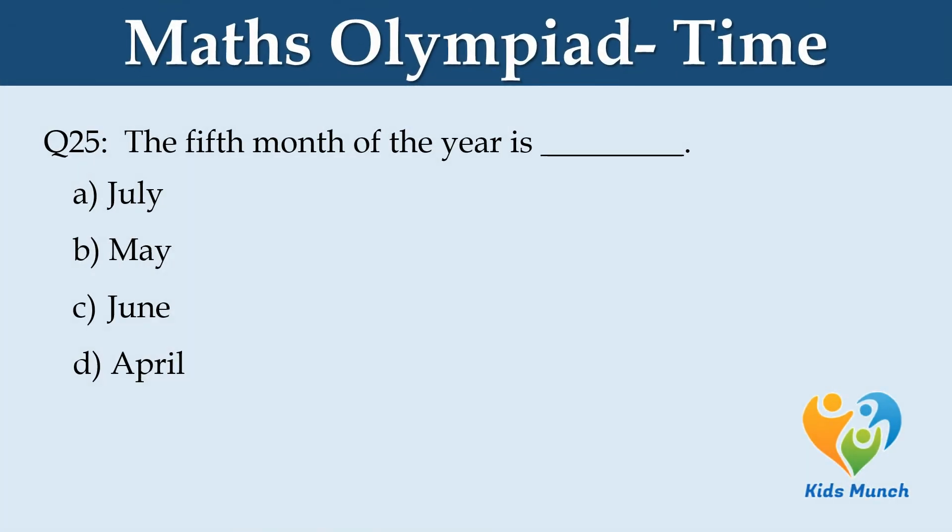The fifth month of the year is dash. Option A: July. Option B: May. Option C: June. Option D: April.